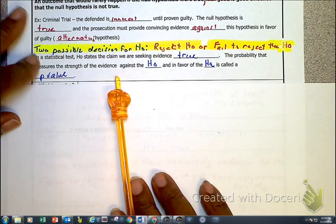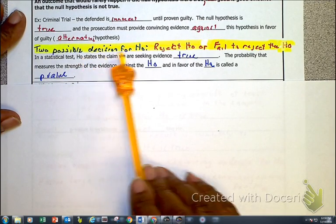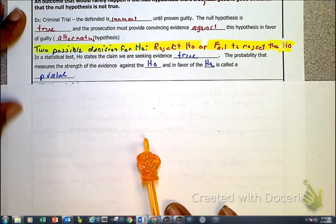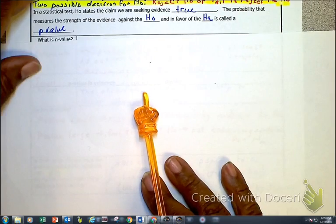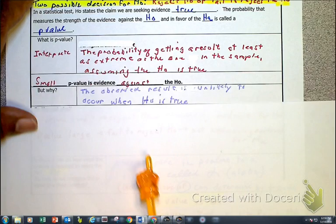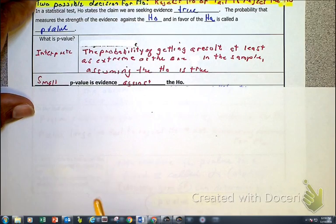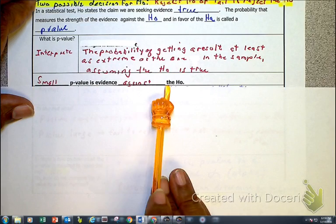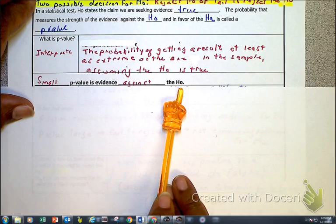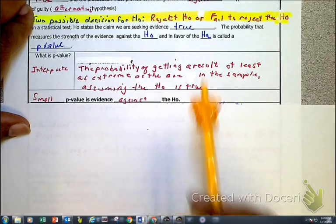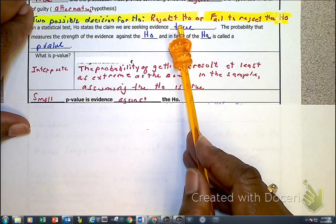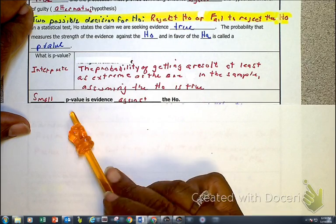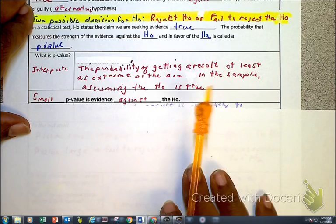Also, if you have not had a chance to write this down here, write down the idea of reject and fail to reject the HO. And we're going to talk about how the p-value is used to make that determination. And it's made because of this: when the p-value is small, it's evidence against the HO. So that means that we are going to reject the HO. We're going to reject the null hypothesis.